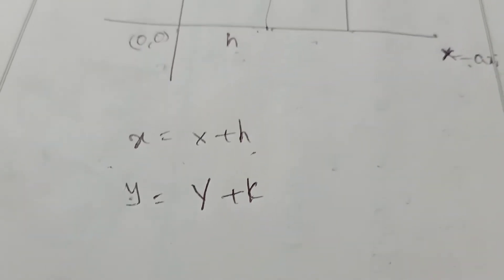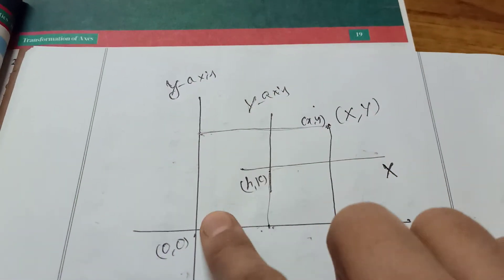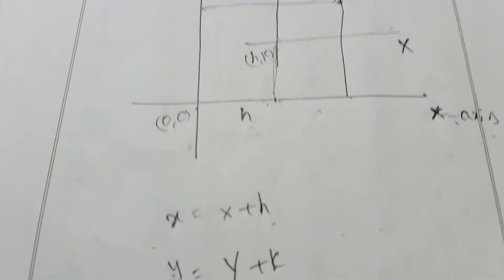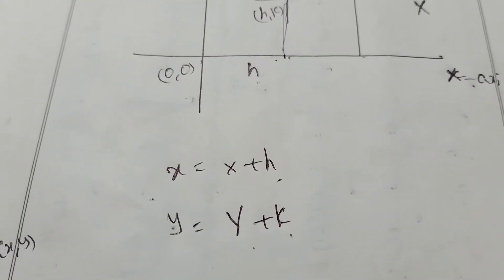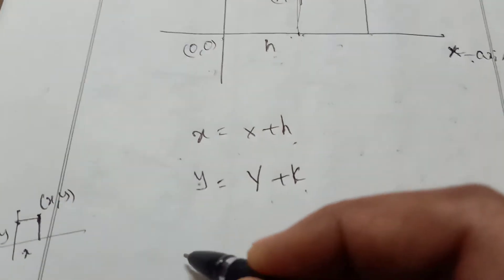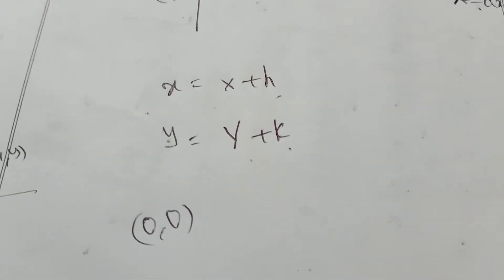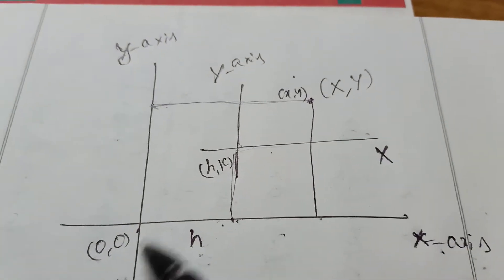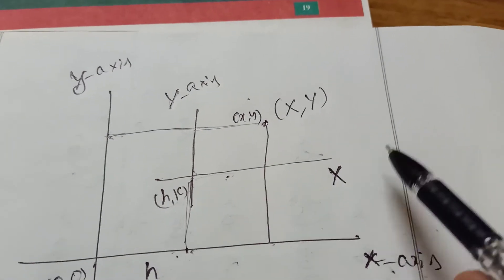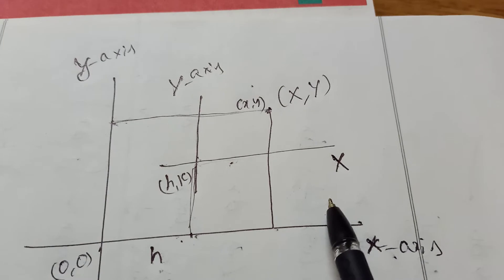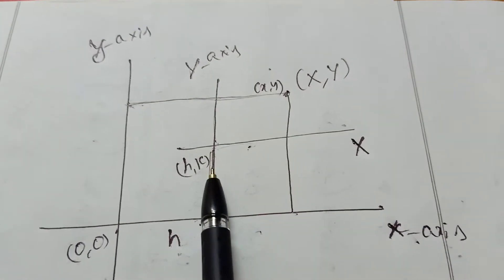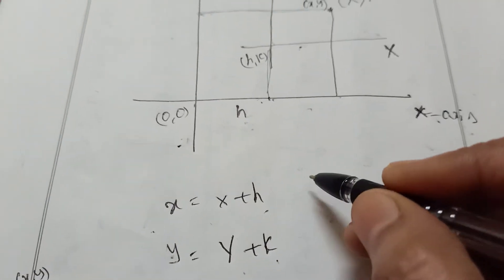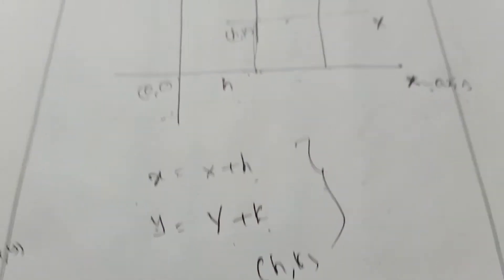Small y equals capital Y plus K — this distance small k plus this gives capital Y plus K. These are the formulas. Whenever in a question the origin is shifted to H comma K, you change the equation to capital X capital Y using these formulas.